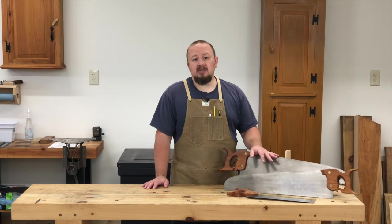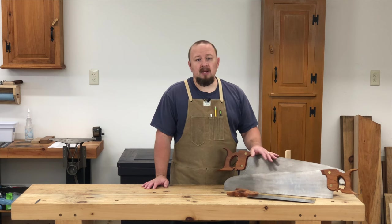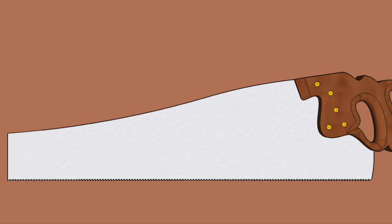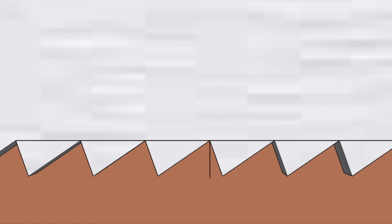The second aspect of tooth geometry that we need to understand is the rake angle. This is simply the angle that the front of the tooth makes with the tooth line of the saw. Here's our saw again — the handle is to the right, which means that the front of each tooth is facing left. If we draw a line connecting the gullets of the teeth, this is the tooth line. A line perpendicular to the tooth line represents zero degrees of rake, or a perfectly vertical tooth. In Western sawtooth geometry, this is the minimum amount of rake we typically have. In this particular example, the teeth lean back towards the handle at 20 degrees, so we would say this saw has 20 degrees of rake.